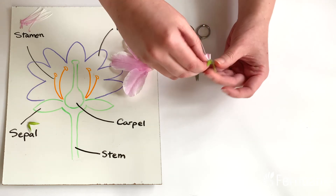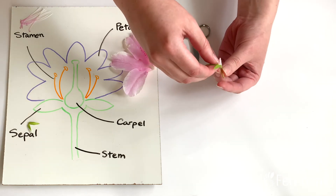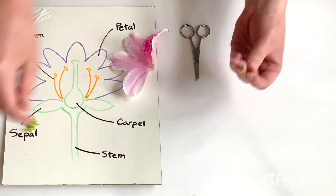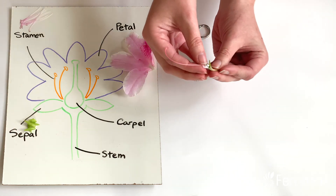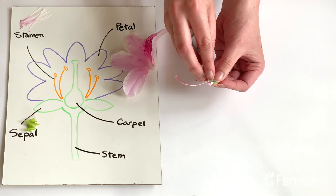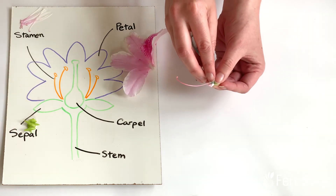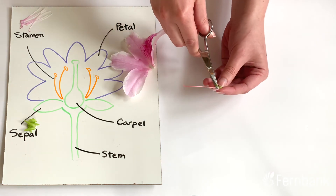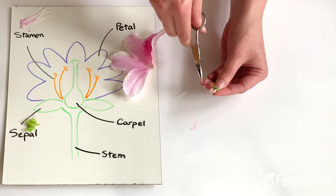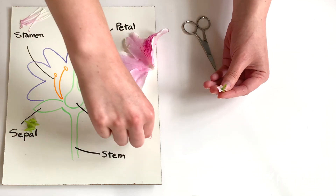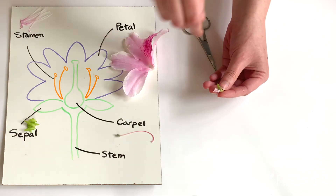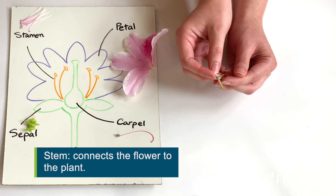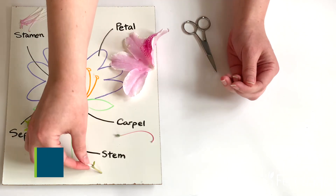To get a better look at our carpel — there we go. So we can see down there at the bottom, this is where the seed would form eventually if the flower was pollinated. So we'll go ahead and remove that. We do still have a little bit of our petals there and our sepal leaves, but that leaves our stem, and this is what attaches the flower to the plant.